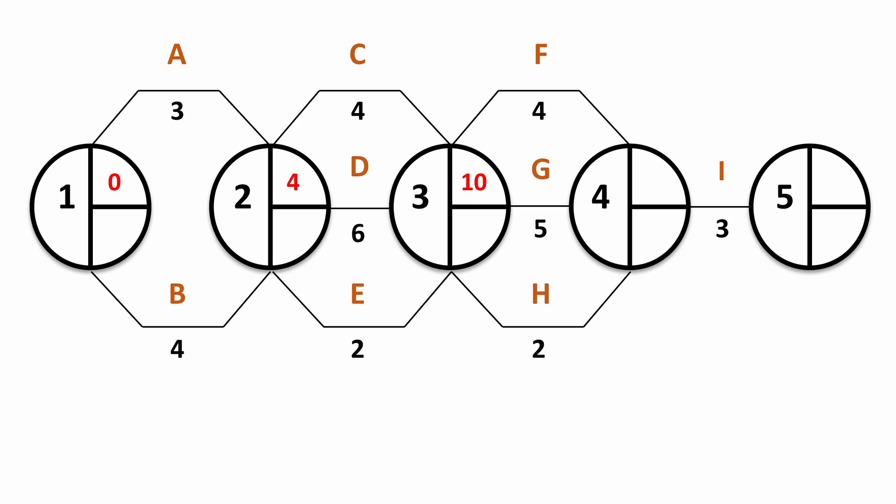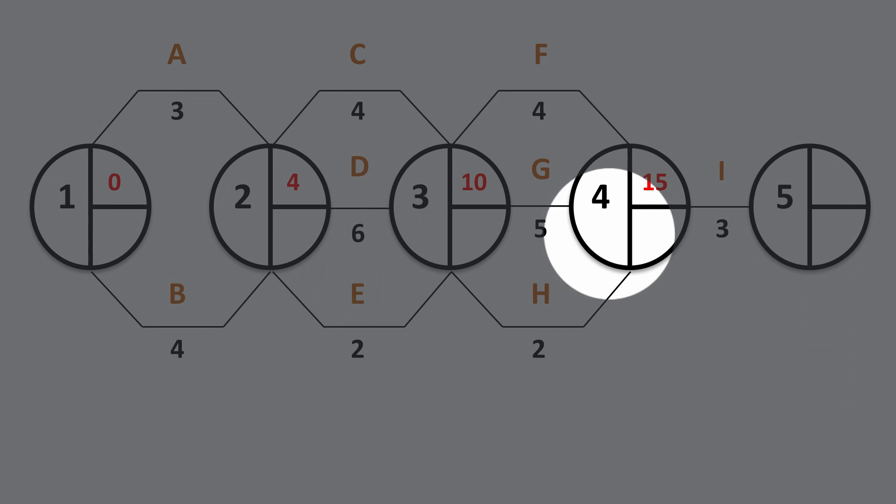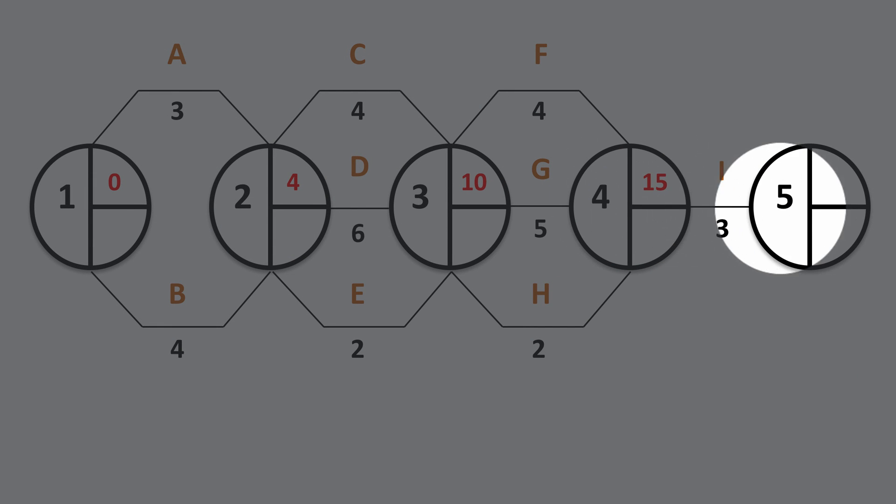There are no other activities apart from I that go from node 4, therefore it's simply a question of going from node 4 to node 5 and adding in the duration for activity I, which must mean that the project completion time to get all nine activities completed is 18, in this case 18 weeks.